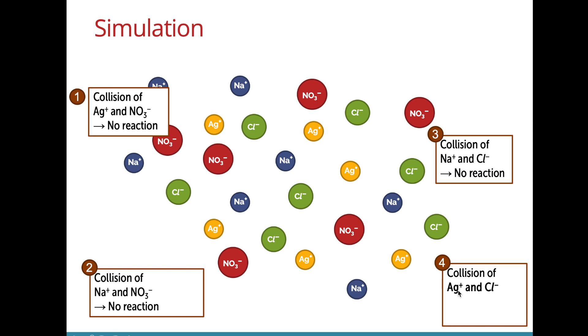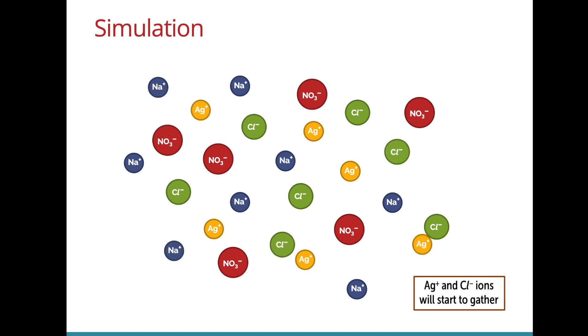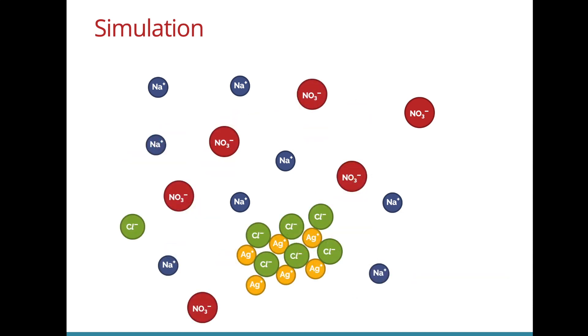However, the collision between silver ions and chloride ions result in the formation of a precipitate because of the strong electrostatic force of attraction that draws the ions together. So the moment this happens, more and more ion pairs will start associating and then it builds up into a giant ionic lattice structure as shown here. We can then filter away the precipitate of silver chloride.